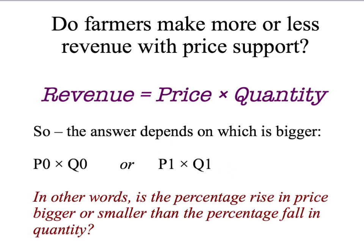This is the same as asking: is the percentage rise in price from P0 to P1 bigger or smaller than the percentage fall in quantity when we go from Q0 to Q1? If the percentage rise in price is bigger than the percentage fall in quantity, revenue will go up. If the percentage rise in price is smaller than the percentage fall in quantity, revenue to farmers will go down.